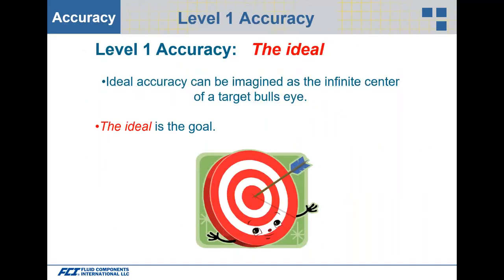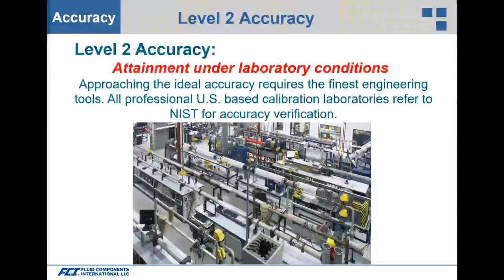The ideal accuracy can be imagined as the infinite center of a target bullseye — the ideal goal. Level two accuracy is attained under laboratory conditions approaching the ideal, using an ideal accuracy flow meter and the finest engineering tools. Most US-based calibration laboratories refer to NIST for accuracy verification and maintain a metrology program.